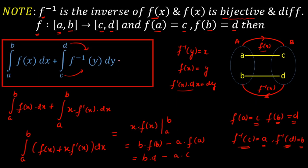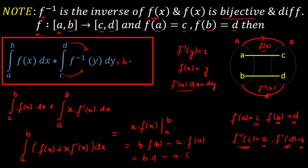We got a nice result: the combined integral equals b·d minus a·c — that is, the product of upper limits minus the product of lower limits. This is a very powerful tool: even if two functions are individually impossible to integrate, when they are inverses of each other, their combined integration equals b·d minus a·c. Thank you.